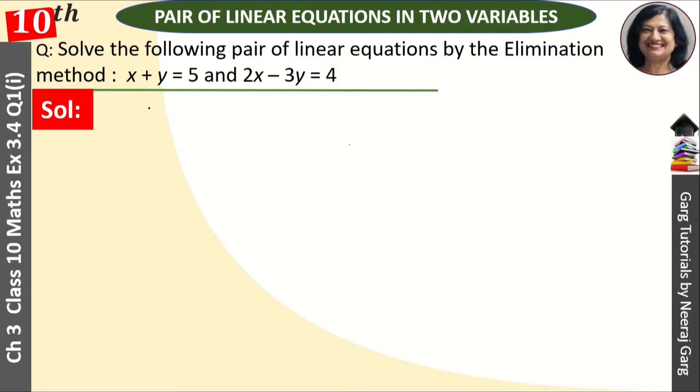We have two equations given: x plus y is equal to 5 and 2x minus 3y is equal to 4. This is our first equation and this is the second equation. We need to solve this by which method? Elimination method.